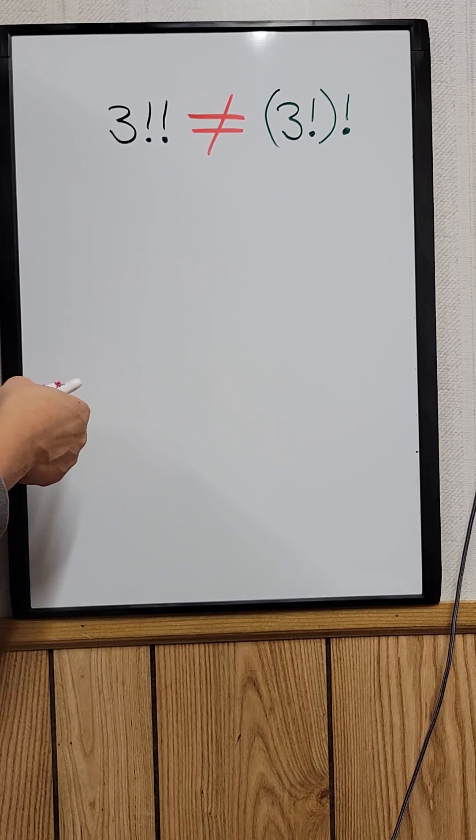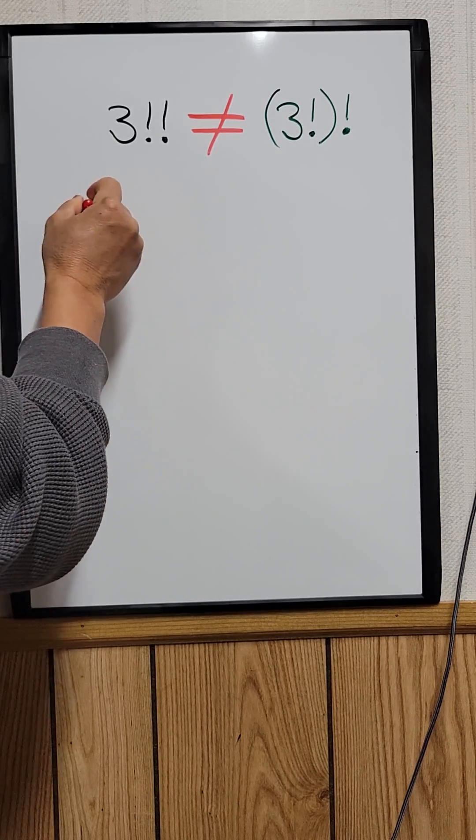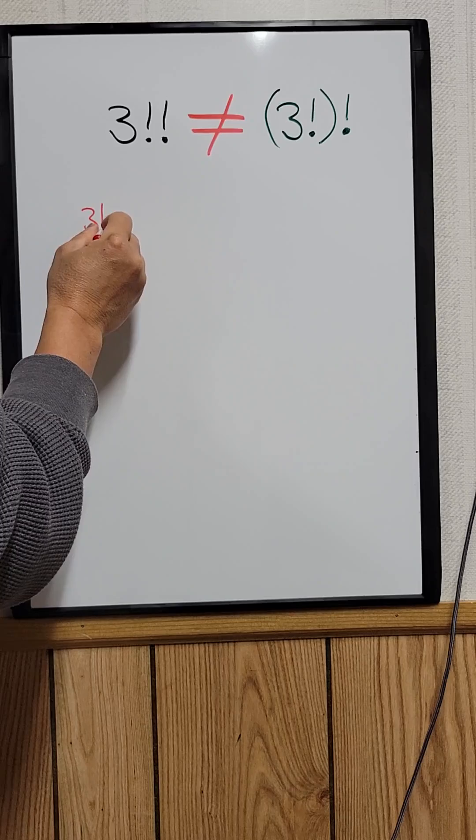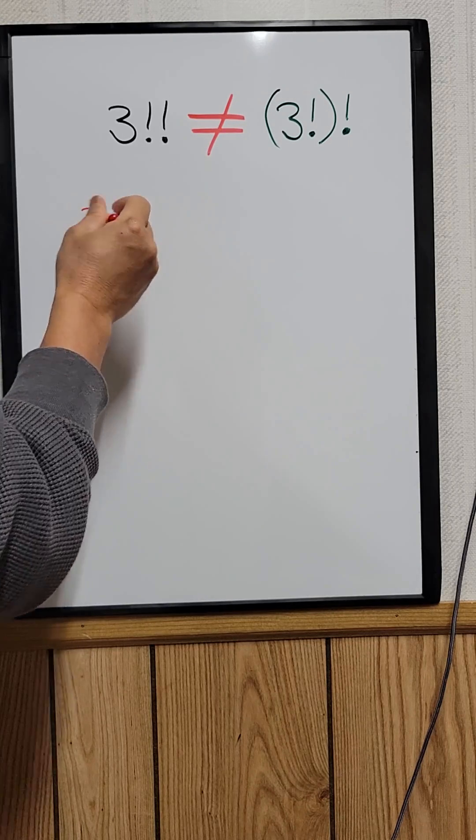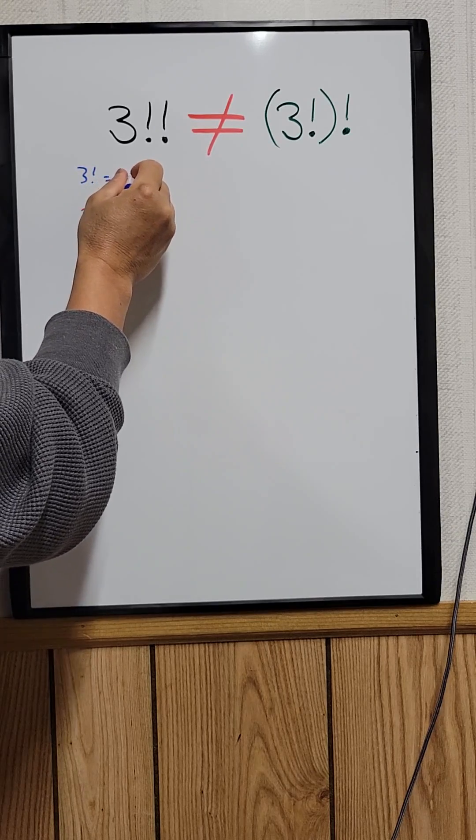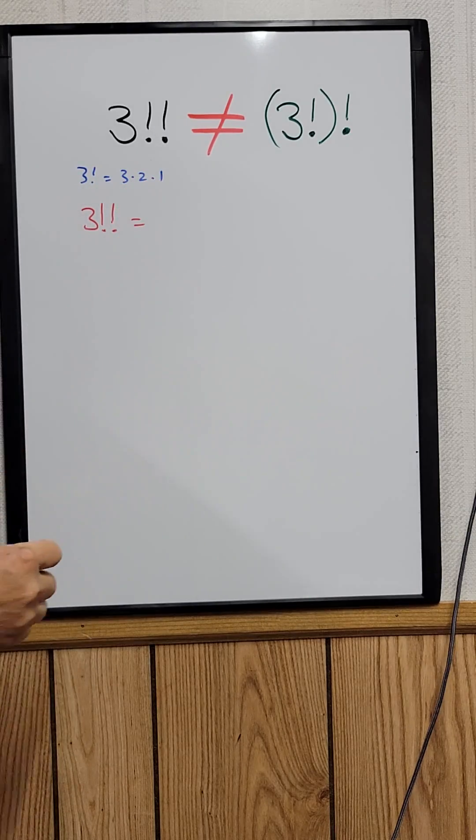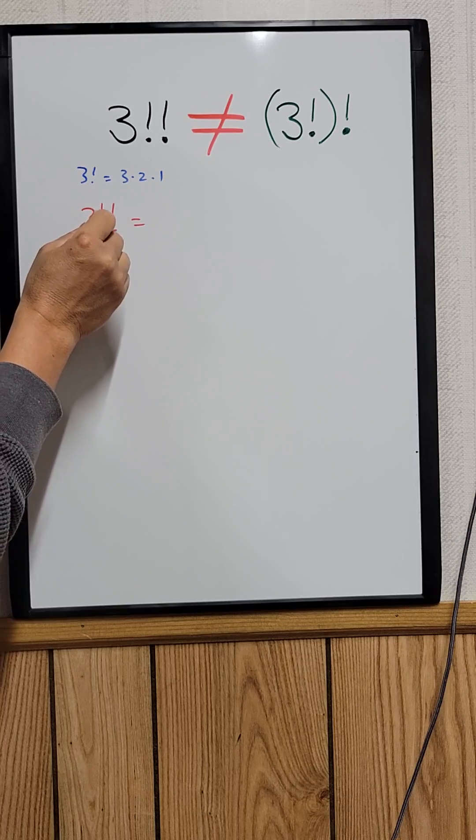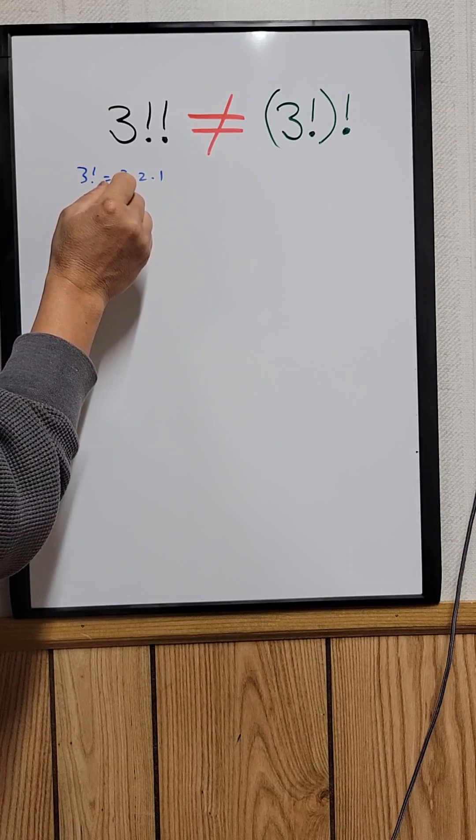So to solve this one right here, 3 double factorial. 3 factorial, which is equal to 3 times 2 times 1. So for 3 double factorial, you take the first 3